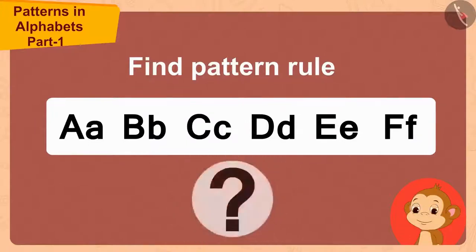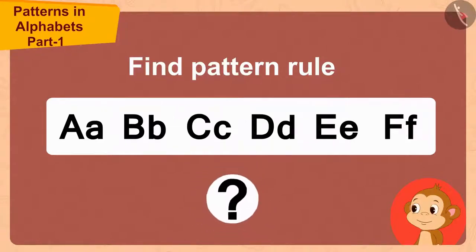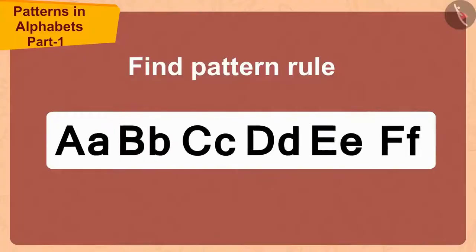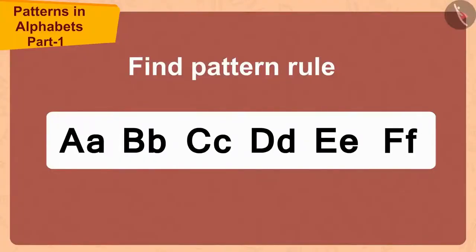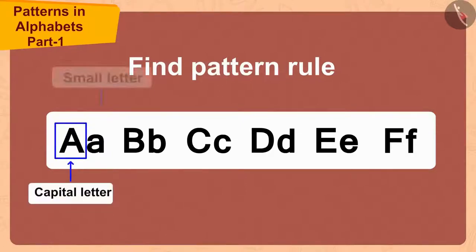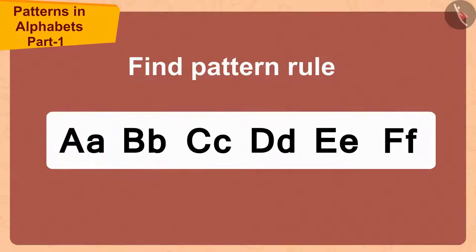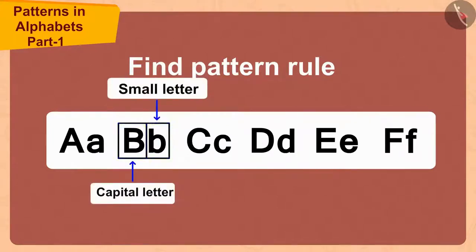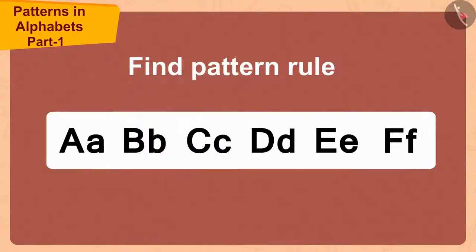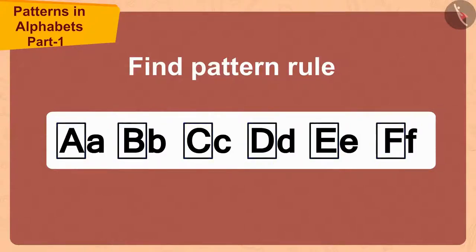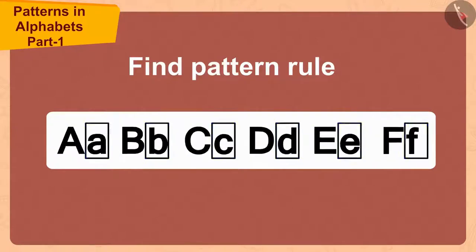Children, can you find the rule of the pattern made from this letter? If you want, you can stop the video and find the answer. Firstly the first letter of the alphabet A is written in capital letter. Then the small letter of the same letter is written. The same rule is then repeated for the next letter B. In this way, this pattern has been made by writing capital letters of every letter and then small letters.